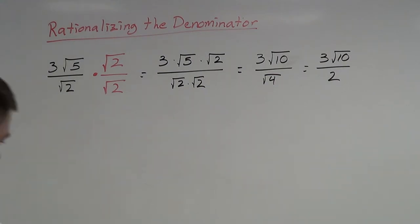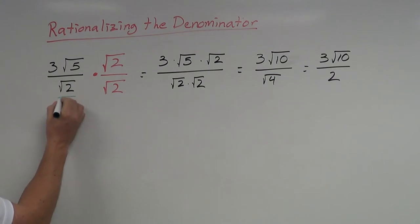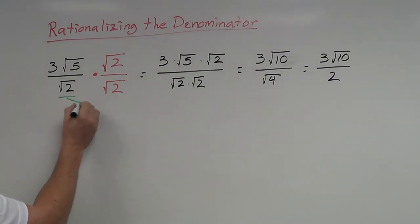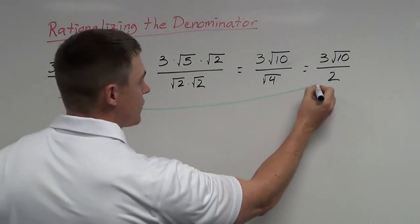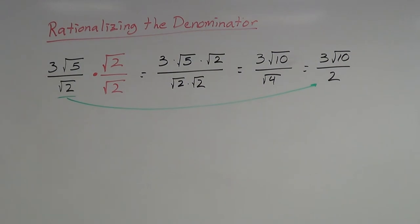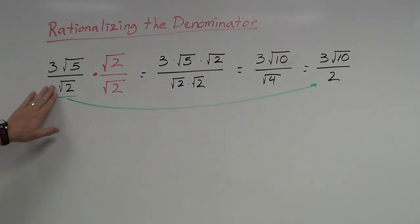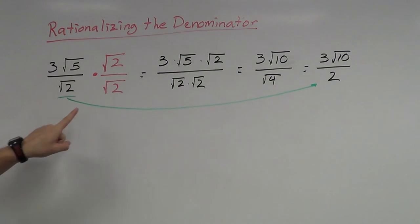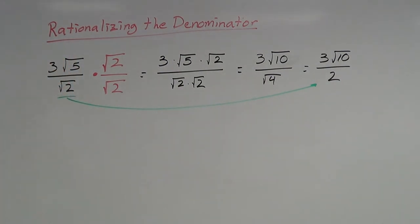Notice what we've done here. We have taken this irrational number — the square root of 2 — and we have turned it into a rational number of 2. This is a much nicer, much neater fraction to work with. So we've taken an irrational number and rationalized the denominator, turning it into 2. That's rationalizing the denominator — that's the process.